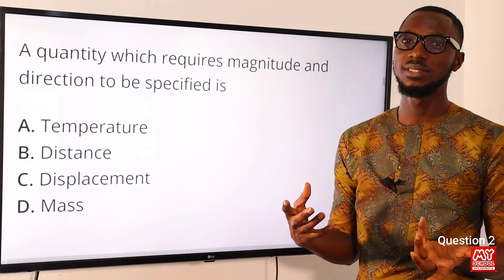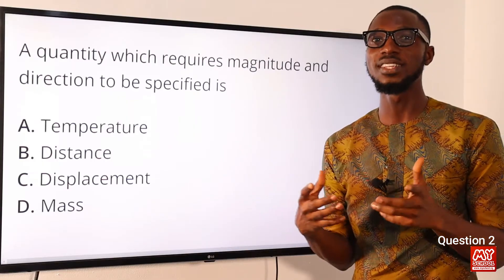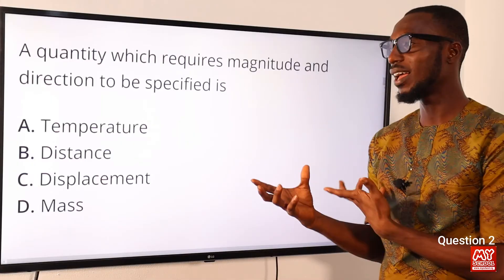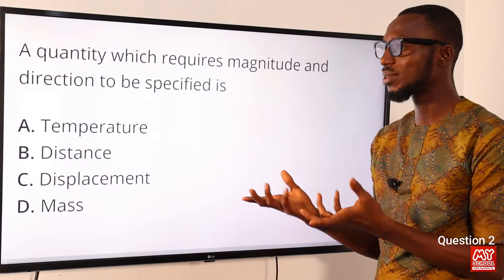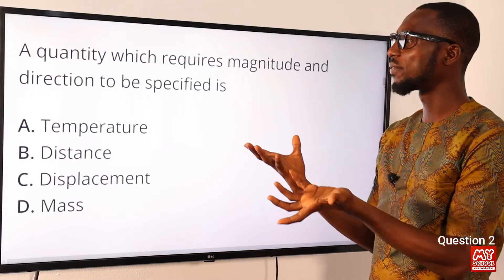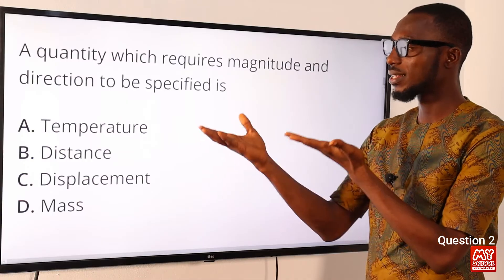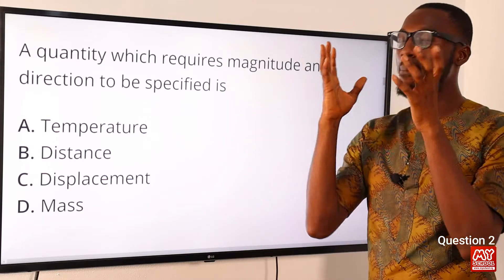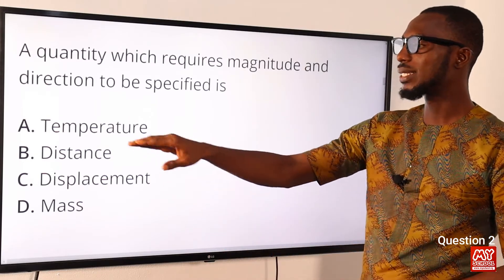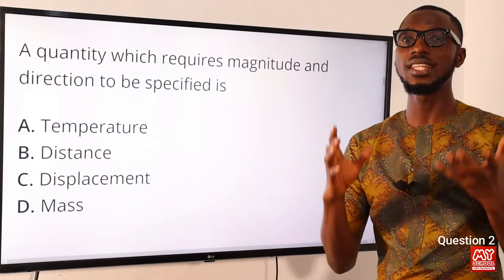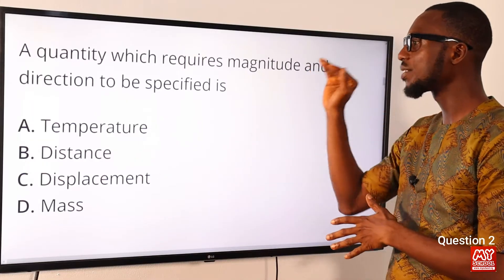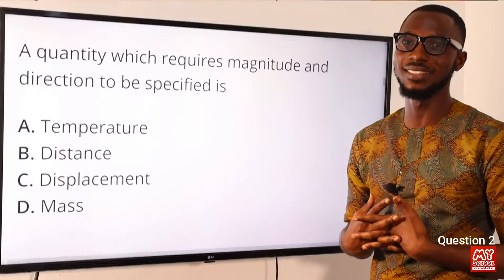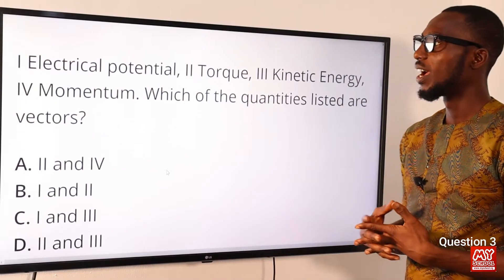Question two: a quantity which requires both magnitude and direction to be specified is what? When you talk about magnitude and direction, you're talking about a vector quantity. From the options, displacement is distance traveled in a particular direction, while temperature and distance are scalar quantities. So the correct option is option C: displacement.